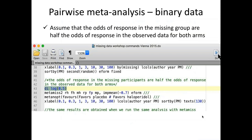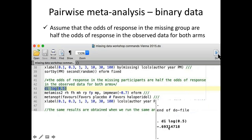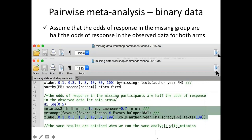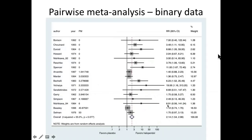Let's assume that the odds of response in the missing group is half the odds in the observed data for both arms — so the IMOR is 0.5. For dichotomous data we work on the log scale, so we define the log IMOR in the command, which is log(0.5) = −0.7. In metamuse2 we set impmin equal to −0.7. Running the command, we see a small difference in the summary effect and confidence interval compared to the available case analysis.